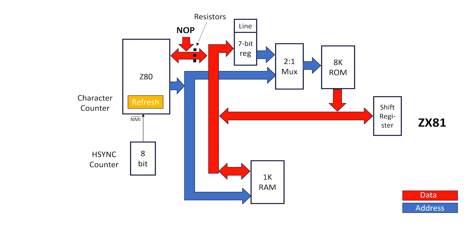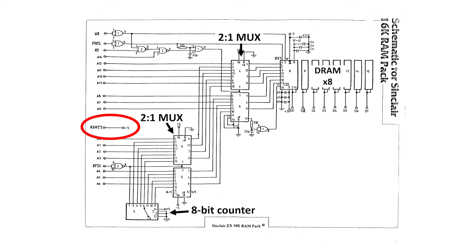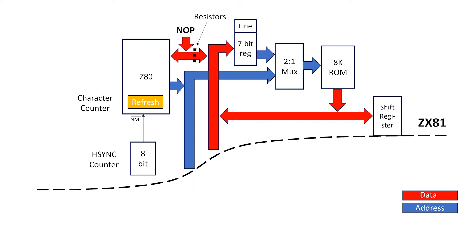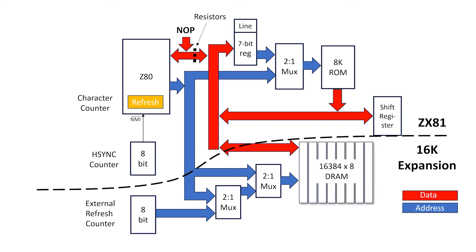Here's a block diagram for our ZX81. When the expansion pack is added, the signal here effectively disables the internal 1K of static RAM. Let's remove that from our diagram and replace it with our 16K expansion pack.